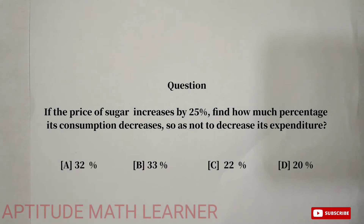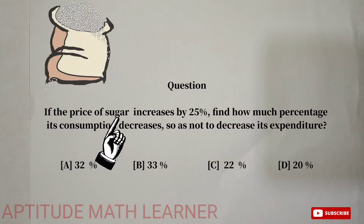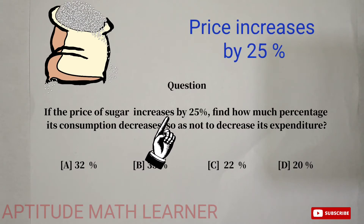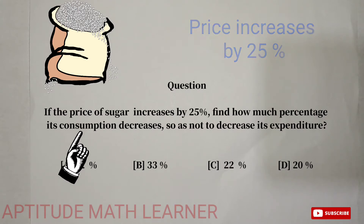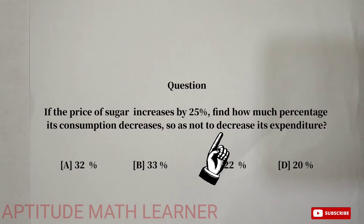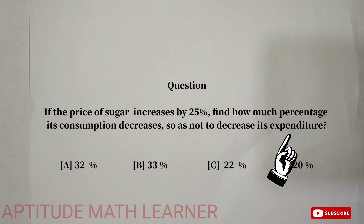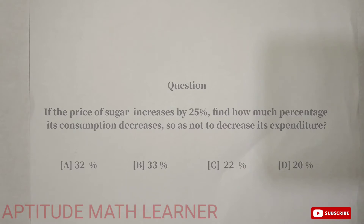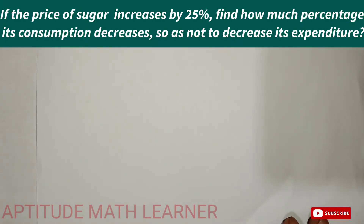Hello and welcome to my YouTube channel Aptitude Math Learner. Today we have a new interesting question: if the price of sugar increases by 25 percent, find how much percent its consumption will reduce so as not to increase the expenditure.